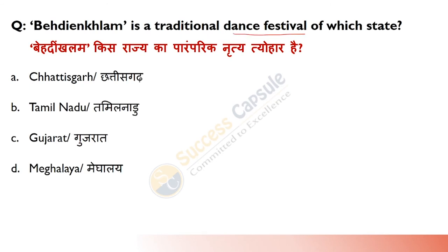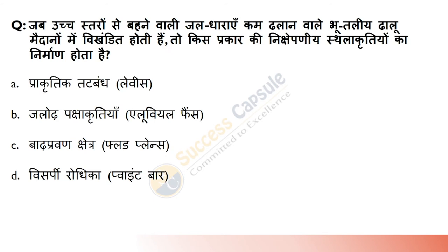Behdienkhlam jo ek traditional dance festival hai, kaun si state ka hai? Answer hai D — Meghalaya. Jaintia Hills mein Meghalaya mein every year in the month of July yeh festival celebrate hota hai, aur iska main purpose good health aur harvest ke liye manaya jaata hai.